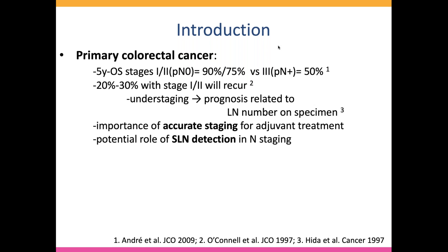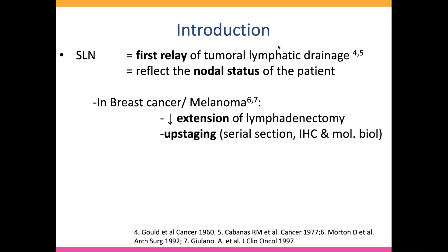The higher the number of lymph nodes examined, the better the staging and the better the prognosis, as we will have a shift from stage 1 and 2 to stage 3. We know that patients with stage 3 will systematically receive adjuvant chemotherapy. In colon cancer, accurate staging is critical because it directly influences whether to administer adjuvant treatment. Therefore, there is really a potential role of sentinel lymph node detection and staging.